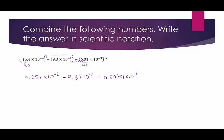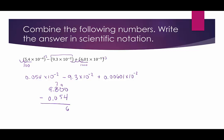We go from left to right. First we do 0.054 minus 9.3. Since we're subtracting a larger value from a smaller one, we flip the order: 9.3 minus 0.054, adding zeros as needed. 10 minus 4 is 6, 9 minus 5 is 4, 2 minus 0 is 2, 9 minus 0 is 9. But this is negative, so we have negative 9.246 times 10 to the negative 2.